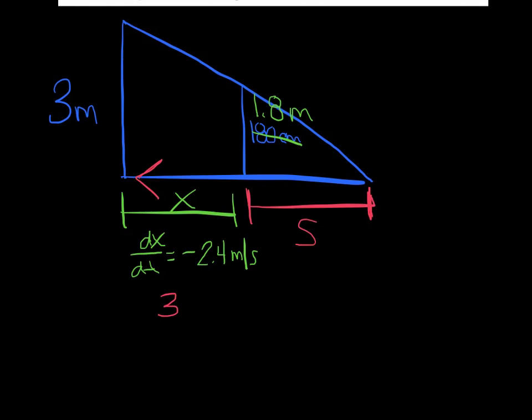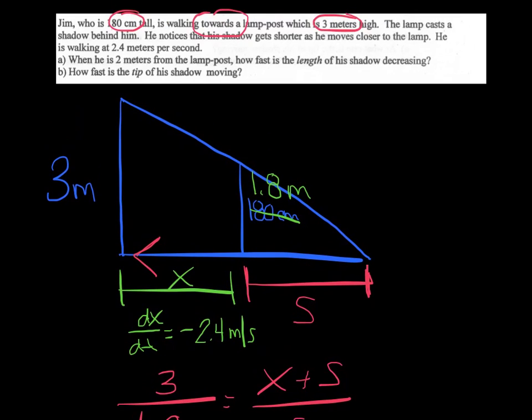So I'm going to say 3 is to 1.8, as x plus s is to s. And lastly, before I go further, let's just review that question. It says, when he is 2 meters from the lamppost, how fast is the length of his shadow decreasing? So I am finding ds/dt, specifically when he is 2 meters.